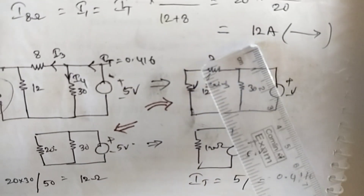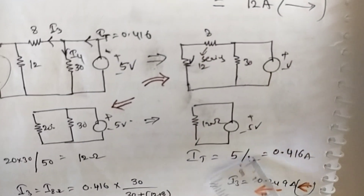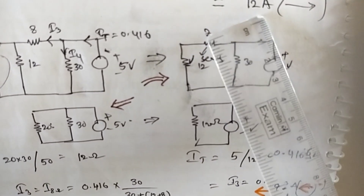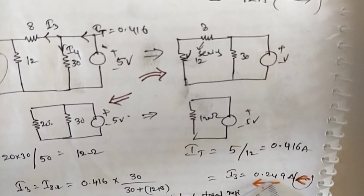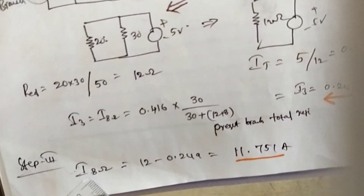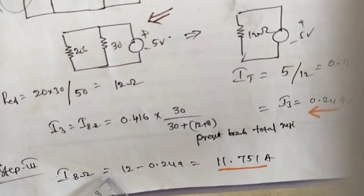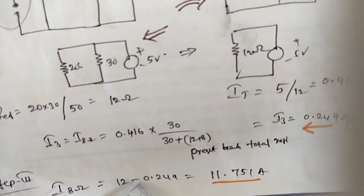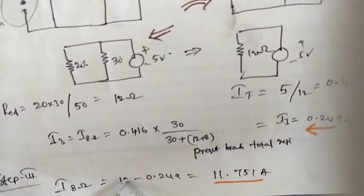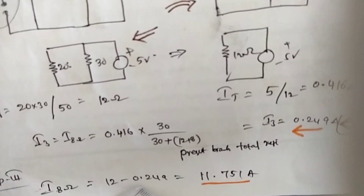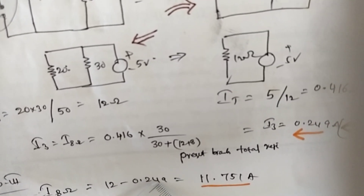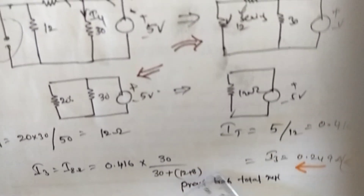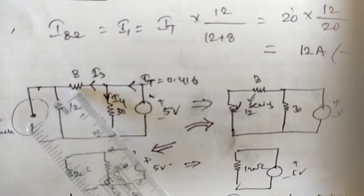Step three: since the two currents are in opposite directions, we take the difference. The current through the 8 ohm resistance = 12 − 0.249 = 11.751 amps. That is the final answer for the current through the 8 ohm resistance using the superposition theorem.